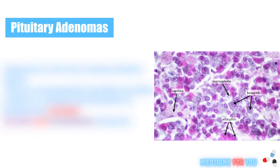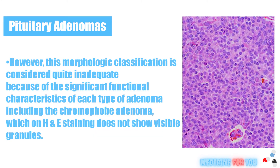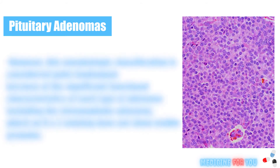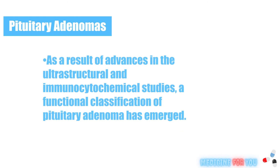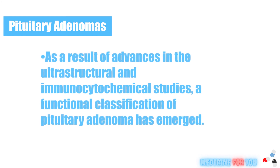Pituitary adenomas are the most common pituitary tumors. They are conventionally classified according to their H&E staining characteristics of granules into acidophil, basophil, and chromophobe adenomas. However, this morphologic classification is considered quite inadequate because of the significant functional characteristics of each type, including the chromophobe adenoma which on H&E staining does not show visible granules. As a result of advances in ultrastructural and immunocytochemical studies, a functional classification of pituitary adenoma has emerged.